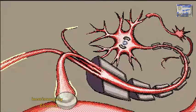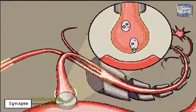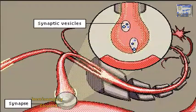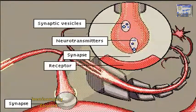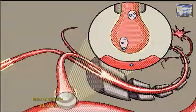The space between two neurons is called the synapse. When the impulse reaches the synapse, vesicles discharge chemical transmitters, which transfer the impulse to the next neuron.